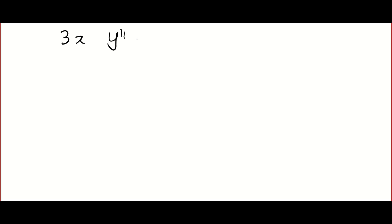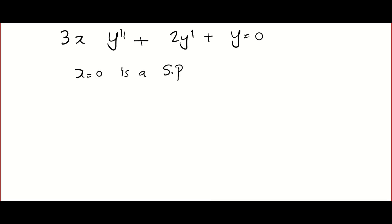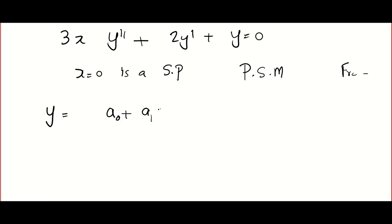So let's solve the equation: 3x y'' + 2y' + y = 0. First you have to write clearly that x = 0 is a singular point, hence we cannot apply the usual power series method, so we go for the method of Frobenius. Do you remember how we assume the solution in the power series method? We let y = a₀ + a₁x + a₂x² + etc.